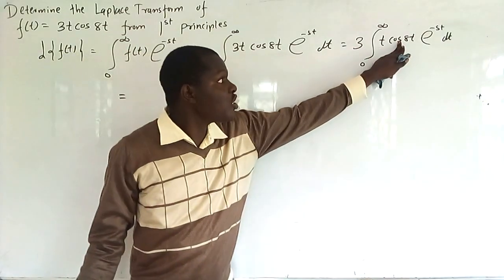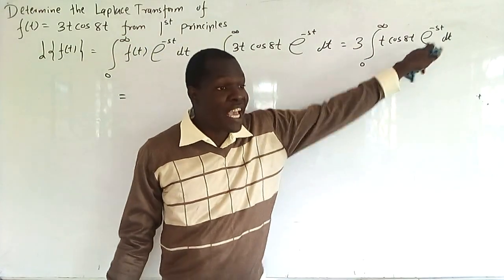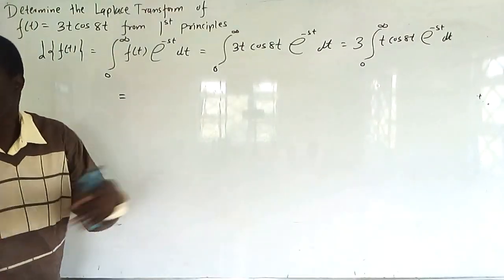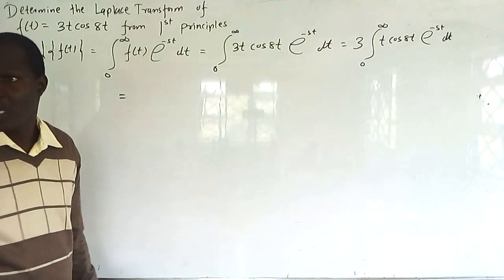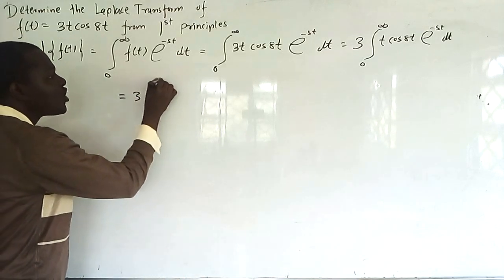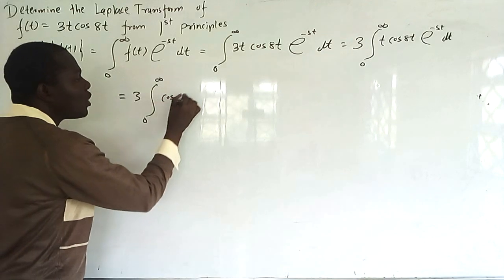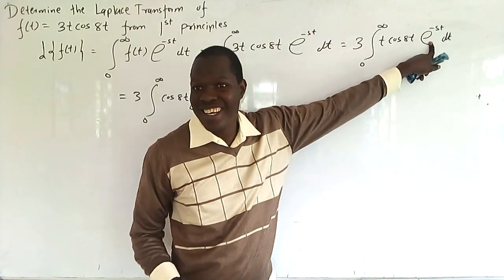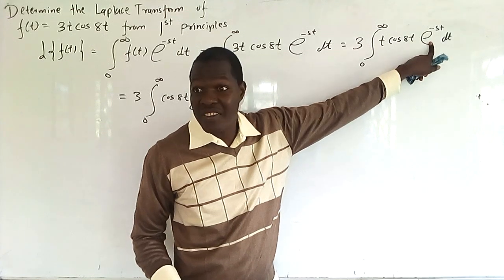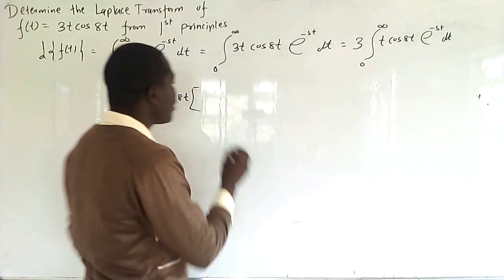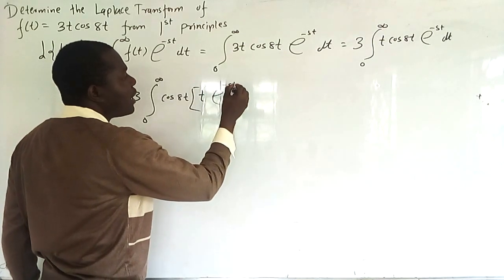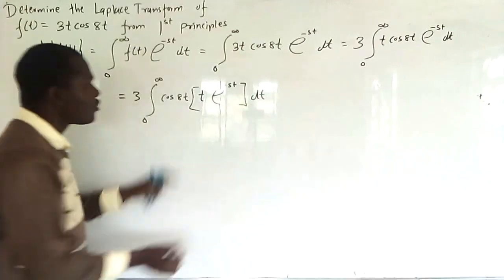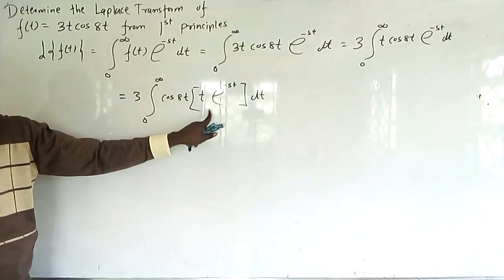Now you can start by eliminating cosh or you can start by applying the shift theorem — it does not matter what you start with. We have 3 times the integral from 0 to infinity of cosh(t) times [t·e^(-st)] dt, where t joins e^(-st) in a bracket.